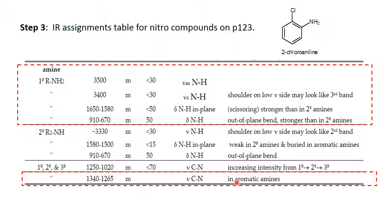Step three, here's the table to get our assignments from. Again, 3500 asymmetric NH stretch, 3400 symmetric NH stretch for primary amines. The NH in-plane bend, the scissoring 1650 to 1580, and then the very broad not very intense NH out-of-plane bend between 670 and 910.